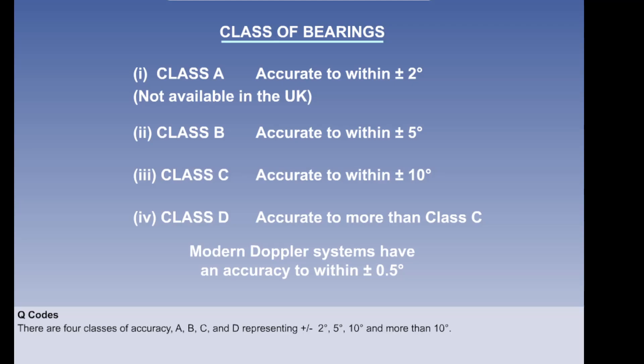The bearings given by the ground station can be very accurate, especially if Doppler principles are used. A simple classification system has been devised for bearing accuracy: Class A, accurate to within plus or minus two degrees, these are not available in the UK. Class B, accurate to within plus or minus five degrees. Class C, accurate to within plus or minus ten degrees. Class D, accurate to within more than ten degrees.